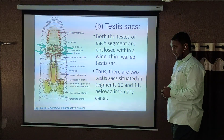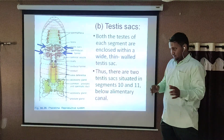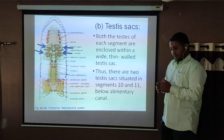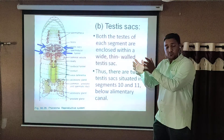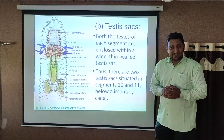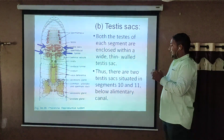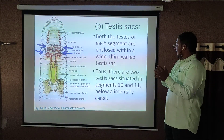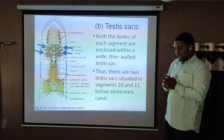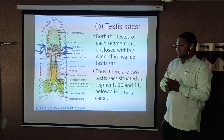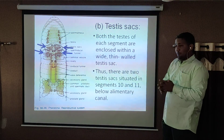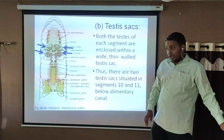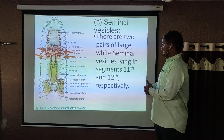The testis sac: both testes are enclosed within a sac-like structure. This sac-like structure is known as the testis sac. There are two testis sacs situated in segment number 10 and segment number 11, below the alimentary canal.